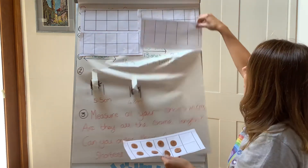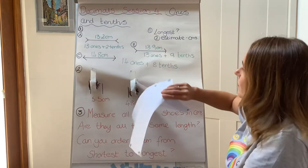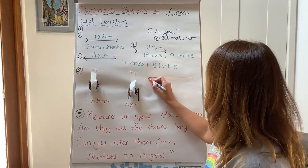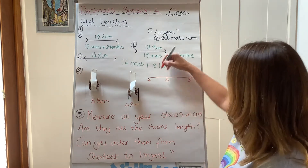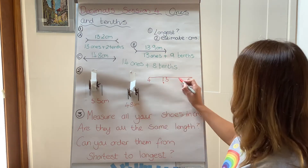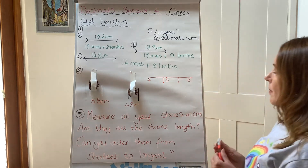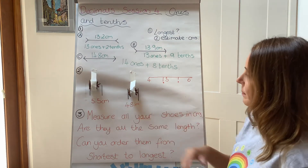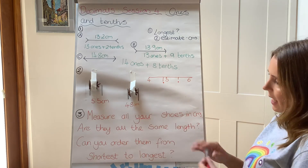Now, we can show this also on a number line. We can draw it with four, five, six marked. 4.8 is more than four whole ones but it's not quite five, so it's about there. And 5.5 is more than five but not quite six — it's actually halfway in between. So we can see that this one is longer than this one, and we can see how much longer it is. We can count on in tenths to see how many tenths larger it is.